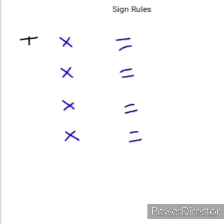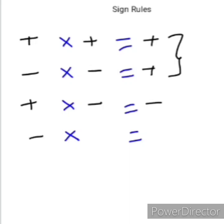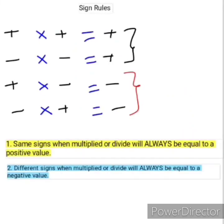There are four rules to consider. Firstly, a positive multiplied by a positive equals a positive value. A negative multiplied by a negative equals a positive value, and those two points can be grouped as one. Thirdly, a positive multiplied by a negative equals a negative. Lastly, a negative multiplied by a positive equals a negative, and these two can be grouped together as one. We can summarize by saying: same signs when multiplied or divided will always equal a positive value, and different signs when multiplied or divided will always equal a negative value.